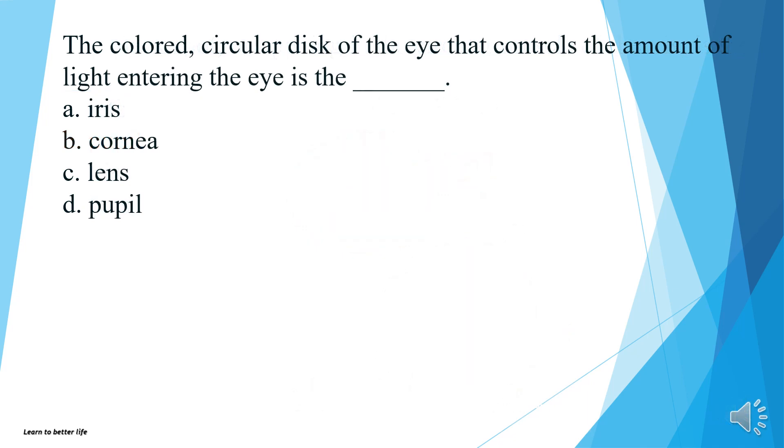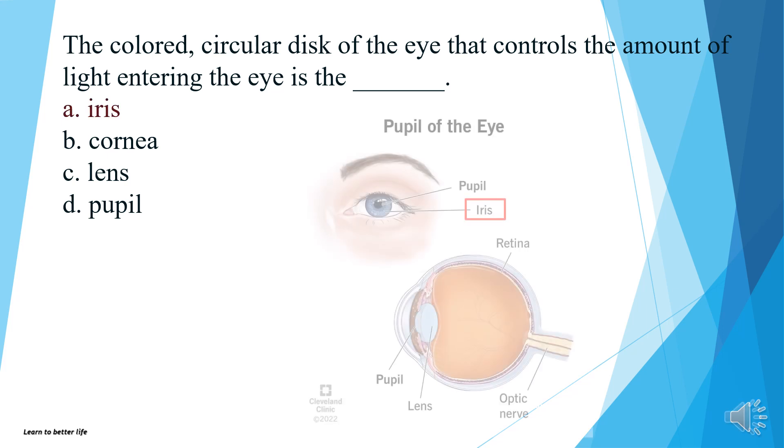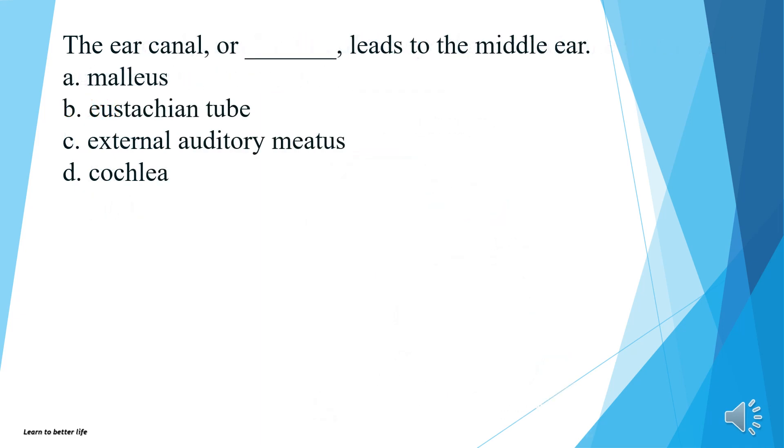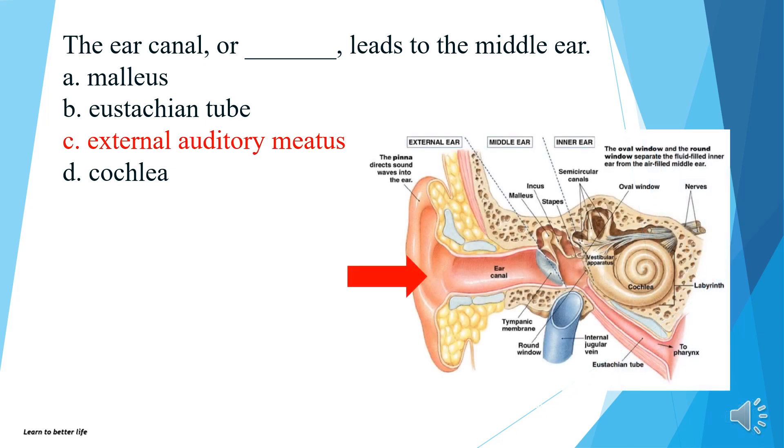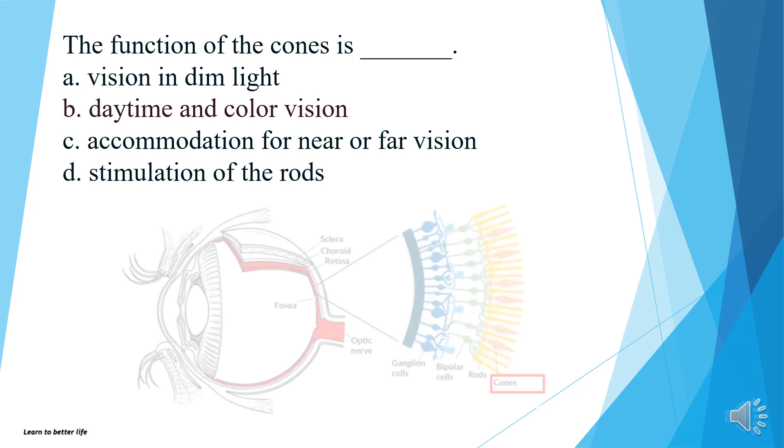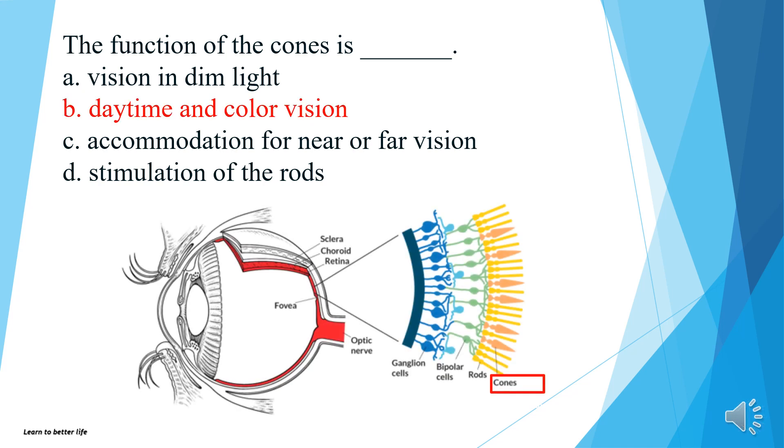The colored, circular disc of the eye that controls the amount of light entering the eye is the iris, cornea, lens, or pupil? The answer is A, iris. The ear canal, or external auditory meatus, leads to the middle ear? Malleus, eustachian tube, external auditory meatus, or cochlea? The answer is C, external auditory meatus. The function of the cones is vision in dim light, daytime and color vision, accommodation for near or far vision, or stimulation of the rods? The answer is B, daytime and color vision.